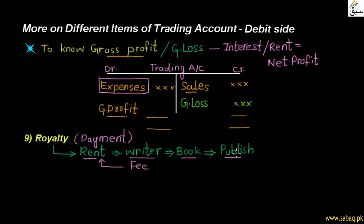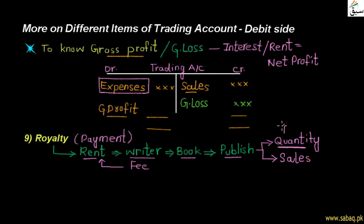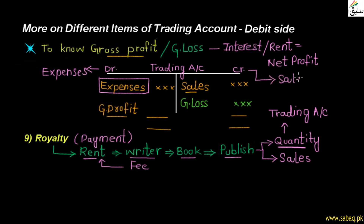We pay royalty for all books or products we sell under someone else's intellectual property. The accounting nature of royalty is debit — it is an expense. We represent expenses as debits. The sales of business — business income — is credit. This is why sales are written on the credit side. If we are paying royalty on a quantity basis, we will write it on the debit side.